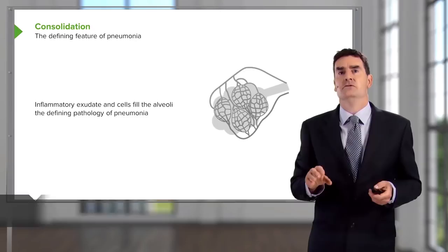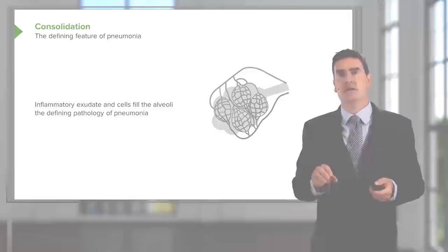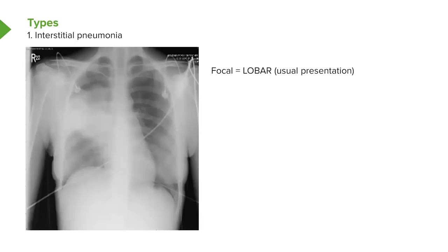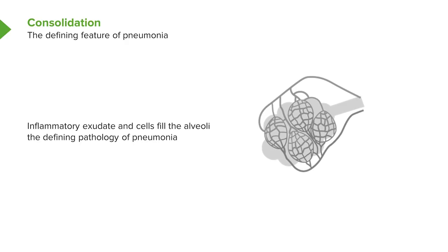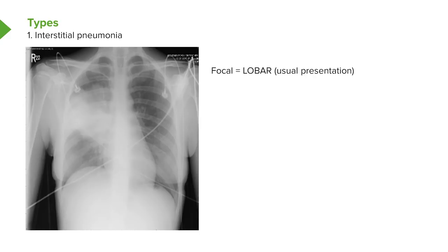Moving on to discuss pneumonia, the defining situation is that you have infection of the alveoli causing consolidation — where the air in the alveoli has been replaced by inflammatory exudate, bacteria, white blood cells and red cells. This is visible on the chest X-ray: for example, a right upper lobe pneumonia shows a white patch reflecting dense consolidation with no air left in those alveoli. This distribution, affecting one lobe only, is called lobar pneumonia and is the commonest presentation of acute pneumonia.